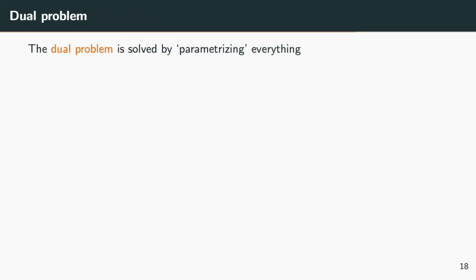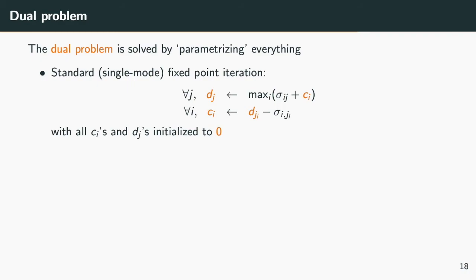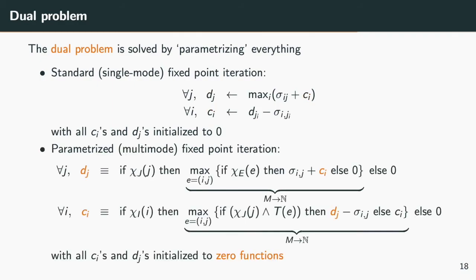We can now move to the dual problem. Recall that in the single mode case, we compute ci and dj, tuples of integers, as the least fixed point of a monotonous operator. This fixed point is computed by a simple relaxation method. In the multimode case, we do the same computation on ci and dj, with the difference that they are now functions of the modes, represented as BDDs.